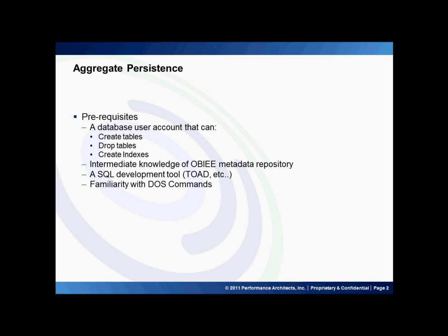The Aggregate Persistence Wizard allows you to create aggregate structures quickly and create definitions in the metadata repository and in the underlying database. There are a few prerequisites to using the Aggregate Persistence Wizard. You'll need a connection pool that uses a user account that has the ability to create tables, drop tables, and that same user account should also have the ability to create indexes, which you'll need to do at a later time manually. You will need an intermediate knowledge of the OBIEE metadata repository, a SQL development tool such as Toad, and a very solid understanding of the underlying database system. You'll also have to have a familiarity with DOS.